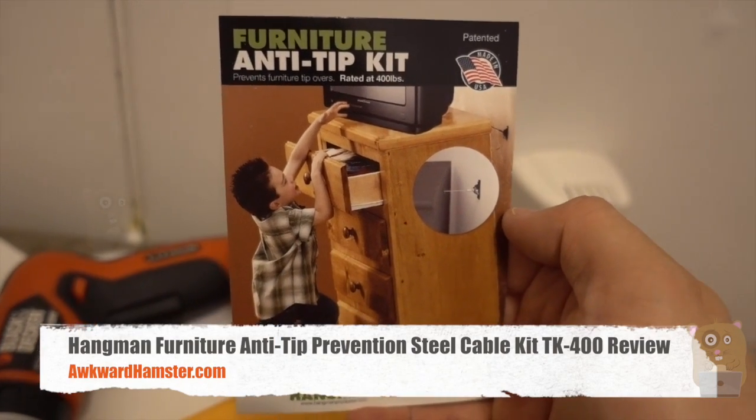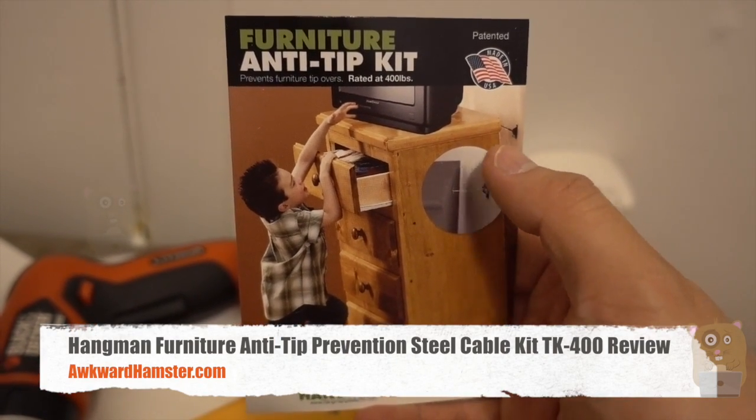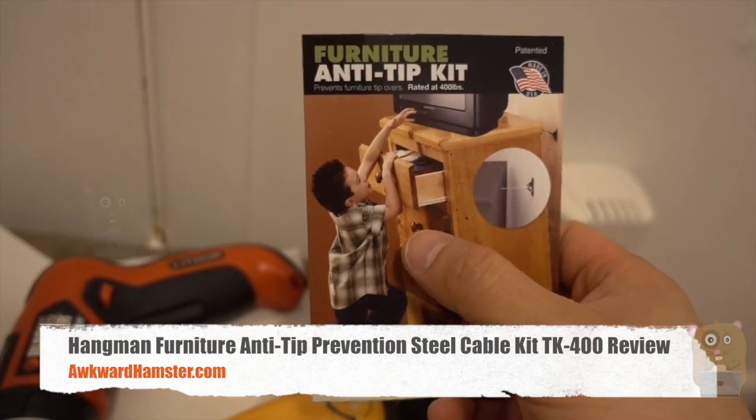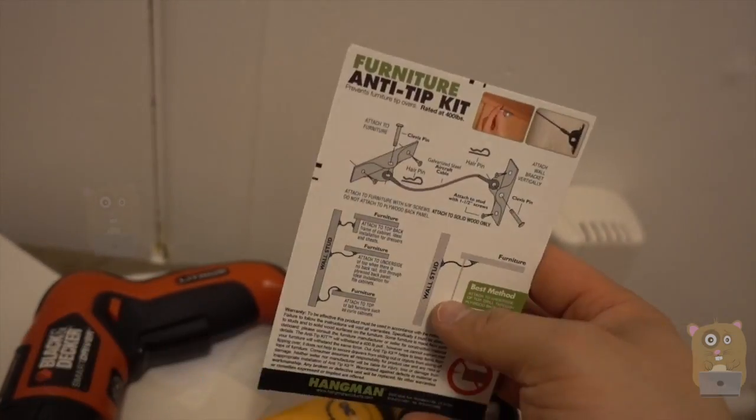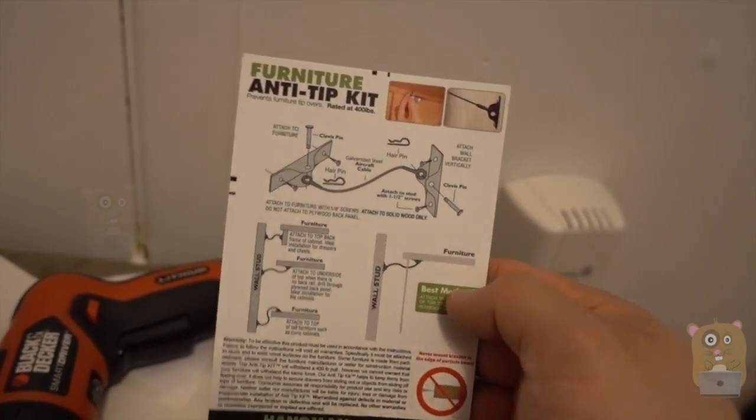Hi, welcome to Awkward Hamster. This is the Hangman Furniture Anti-Tip Kit. I paid roughly $8 for this off Amazon before tax, so it was more than $8 after tax.